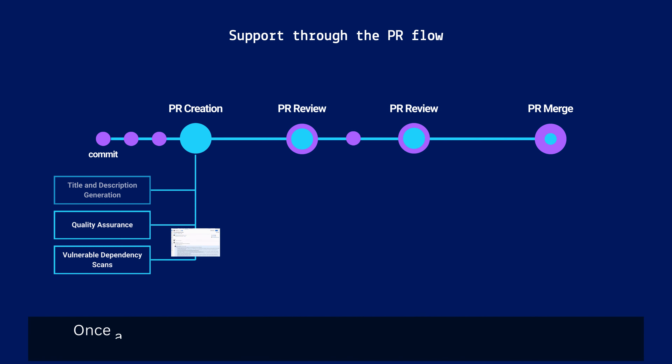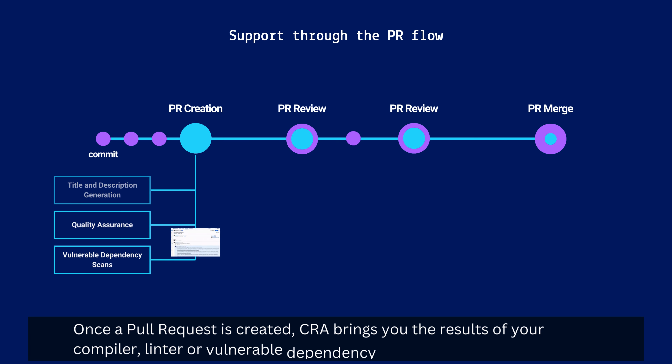Once a pull request is created, CRA brings you the results of your compiler, linter, or vulnerable dependency warnings directly into your PR.